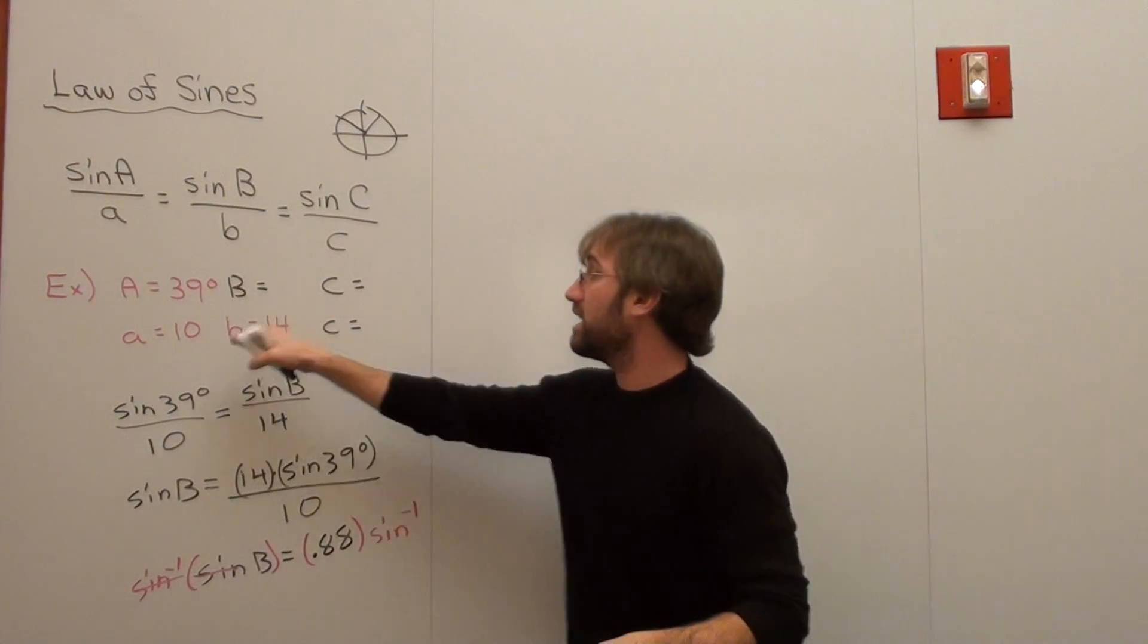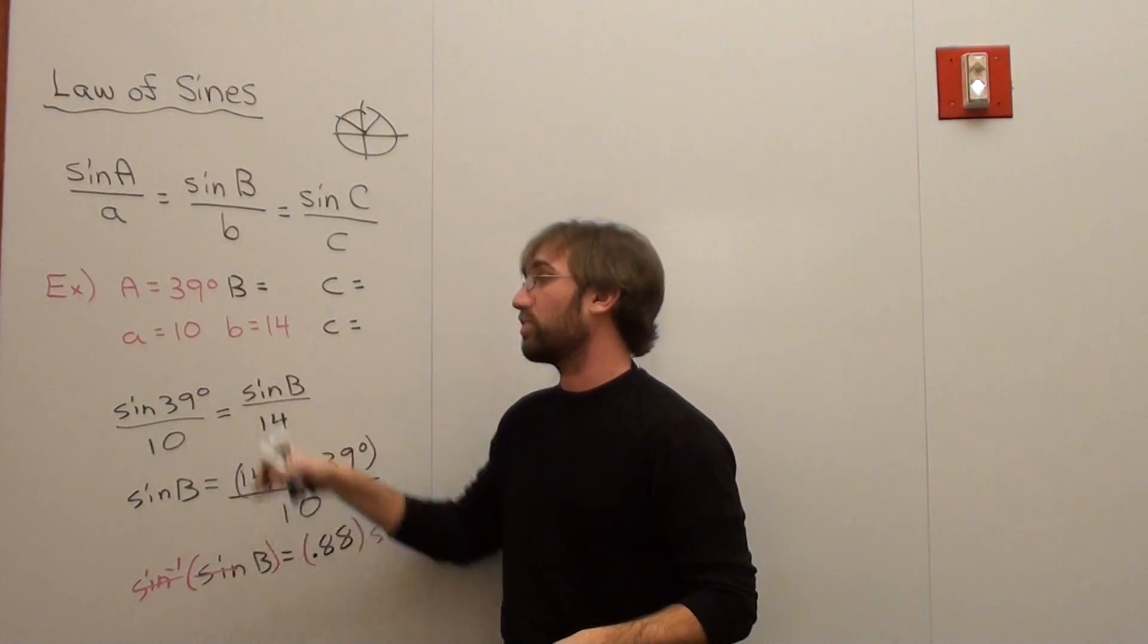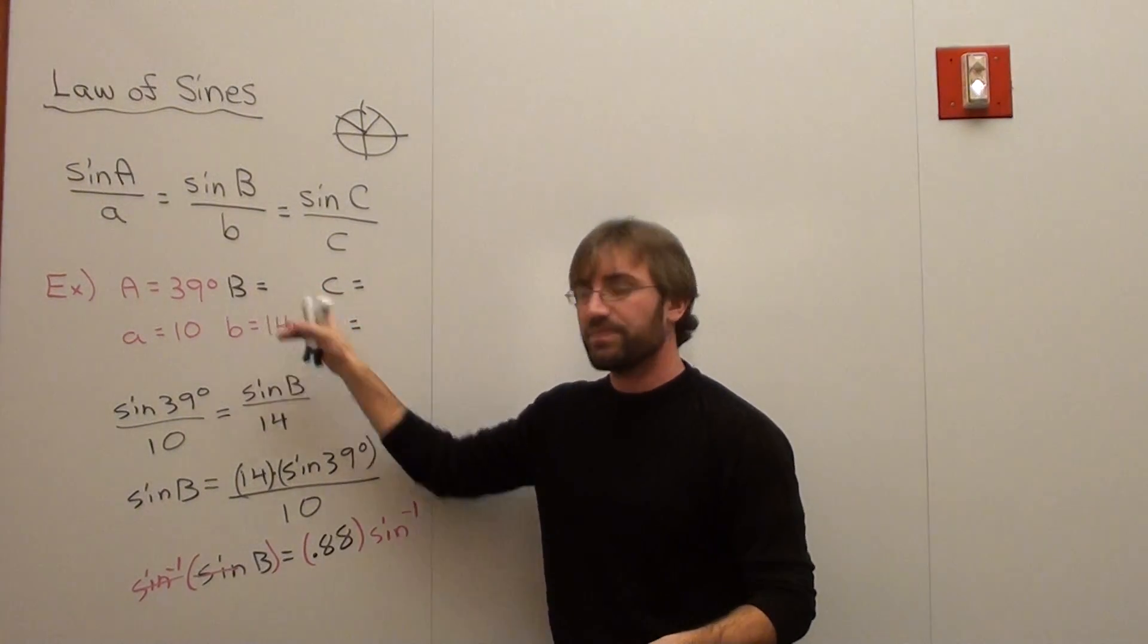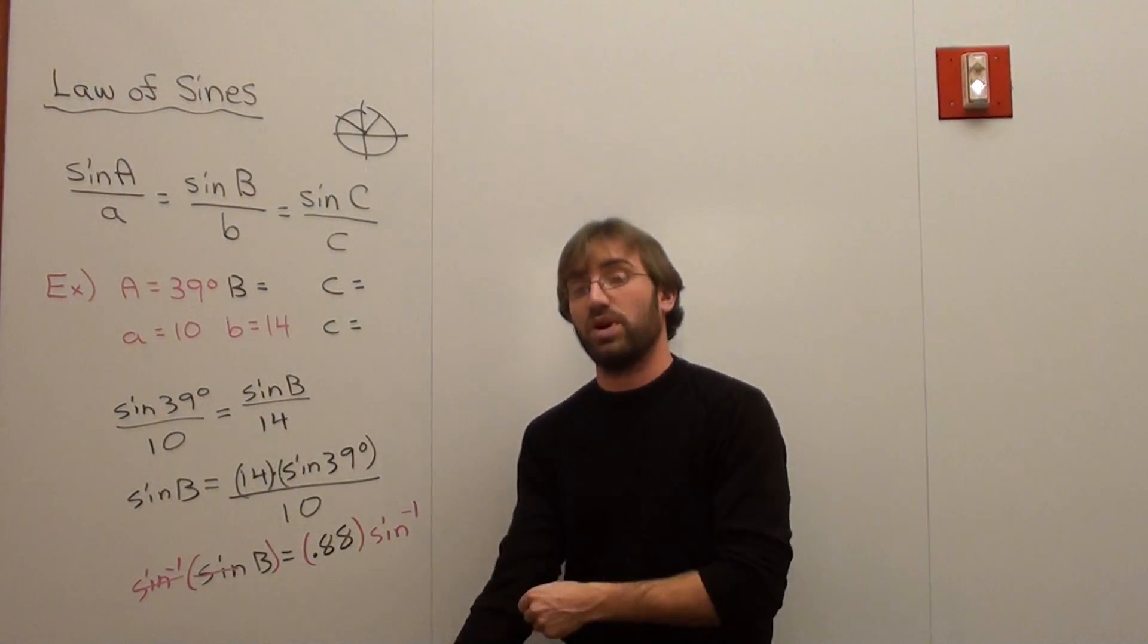Same parameters that we had before: A equals 39 degrees, a equals 10, b equals 14. I went ahead and solved for the problem and got 62 degrees when I did the inverse sine of 0.88.